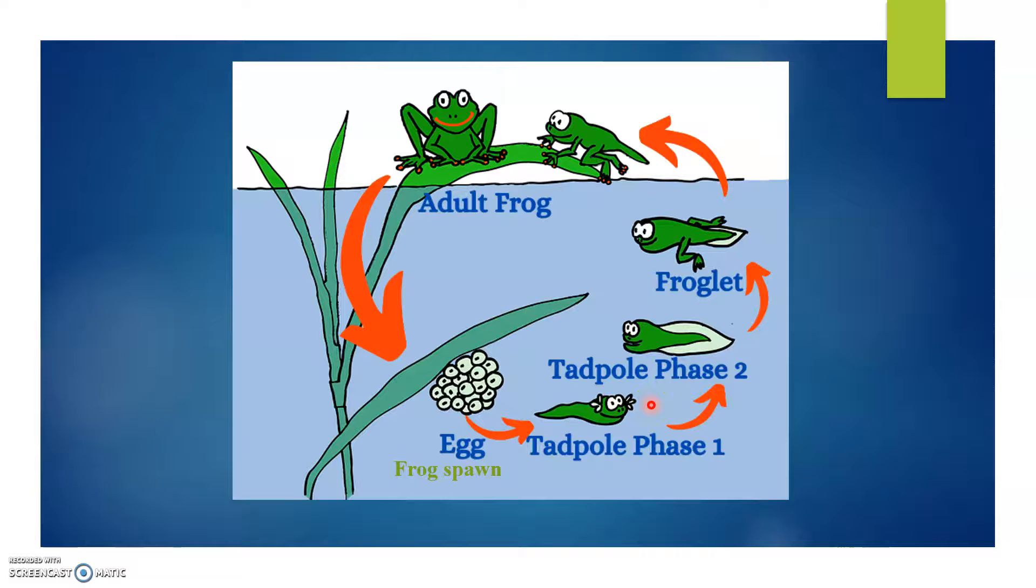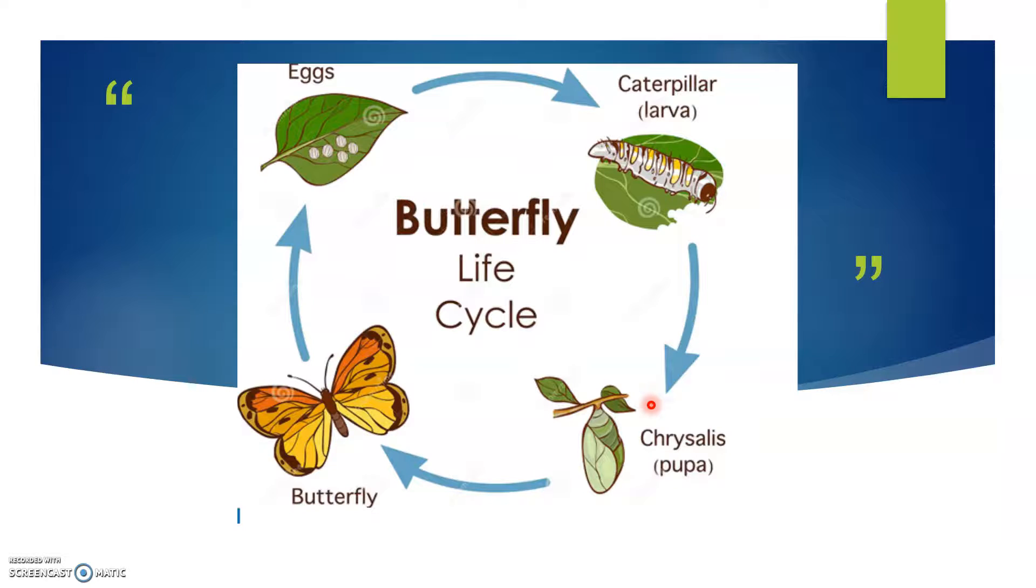Now the next stage is a butterfly life cycle. The first stage is eggs, it's written on your activity book page. Second stage is larva, you will write it. Third stage is pupa, it's also written there. You will write this, and the final stage is butterfly.